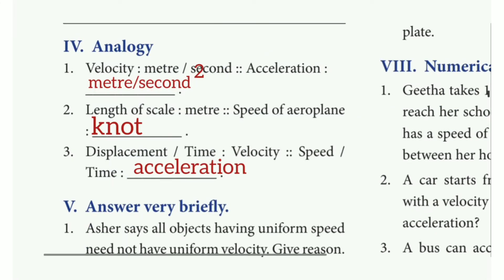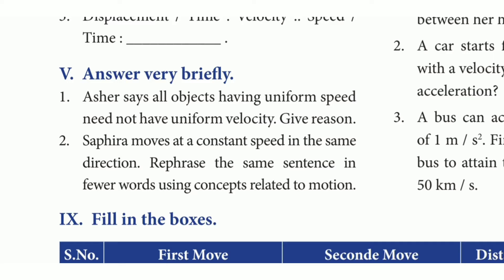Analogy section. First: Velocity — meter per second. Acceleration — meter per second square. Second: Length — meter; speed of aeroplane — knot. Third: Displacement over time gives velocity; speed over time gives acceleration.